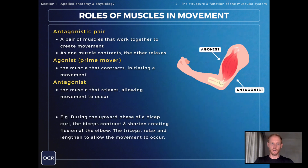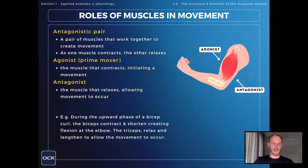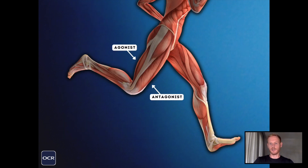The definitions you need to know are agonist and antagonist. The agonist, otherwise known as the prime mover, is the muscle in the antagonistic pair that contracts to initiate the movement. The other muscle, the one that relaxes, is called the antagonist muscle — the muscle that relaxes, allowing the movement to occur.